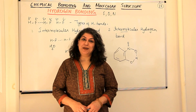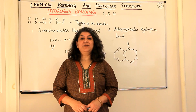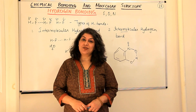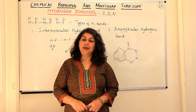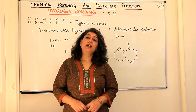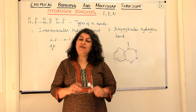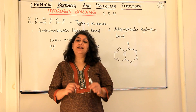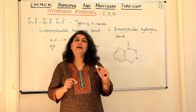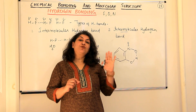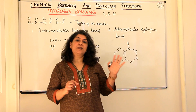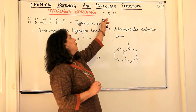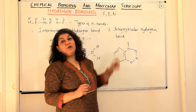Hello, I am Seema and welcome to part 23 of the chapter chemical bonding and molecular structure. I will now tell you about hydrogen bonding. If we look at the periodic table, we find that in the second period the elements which are to the extreme right — other than the noble gas — are fluorine, oxygen, and nitrogen.